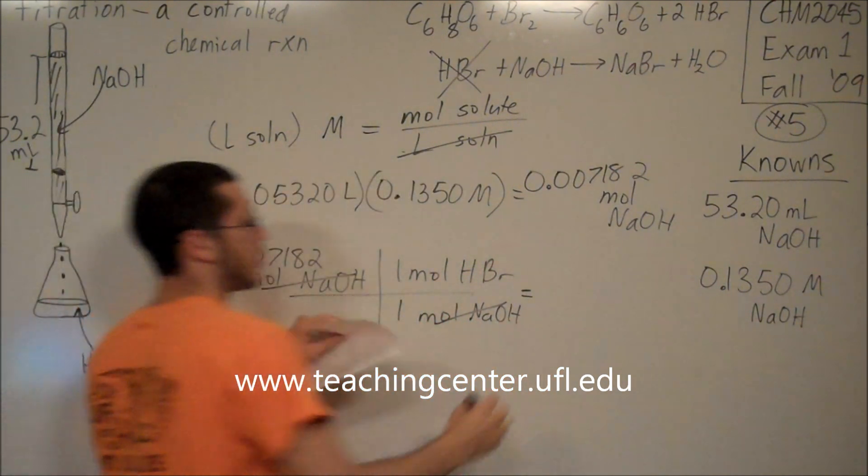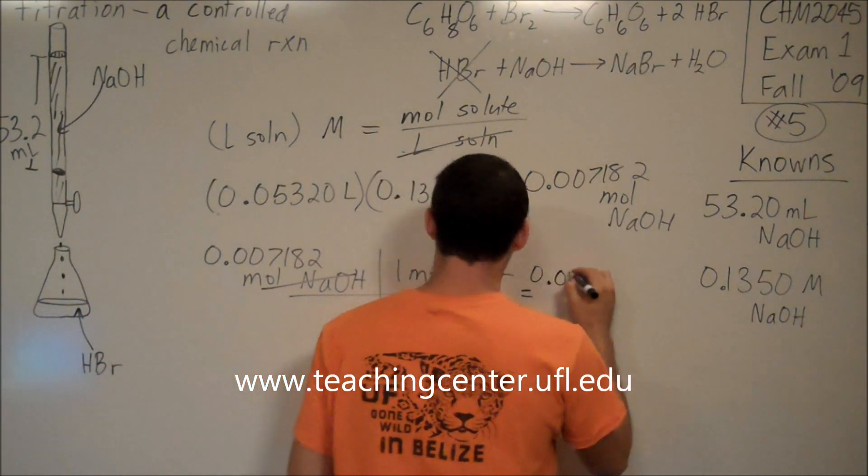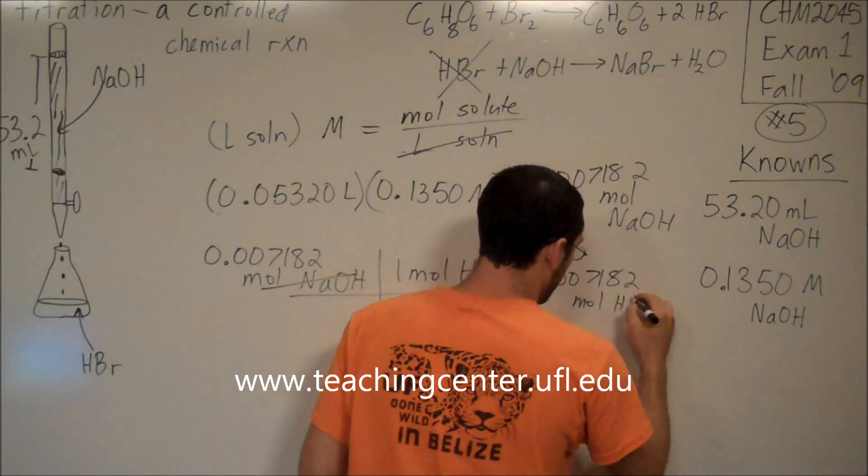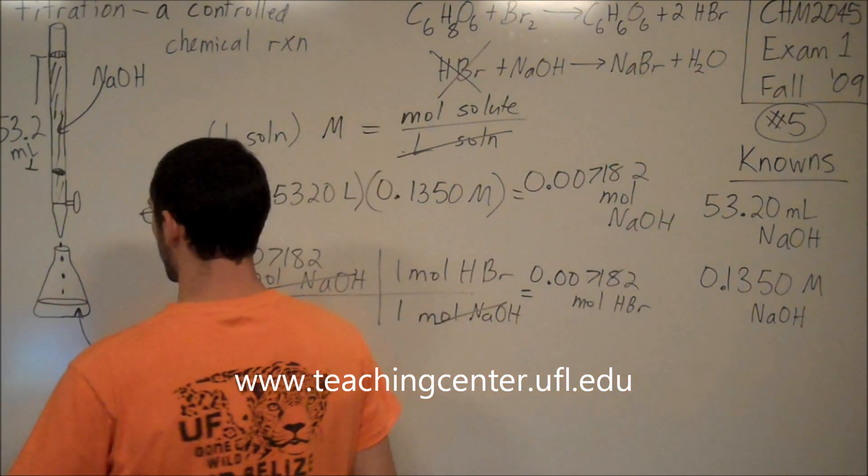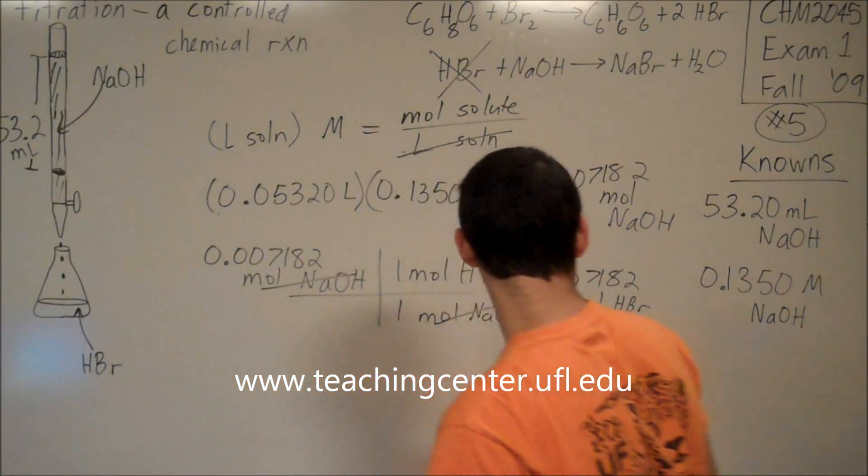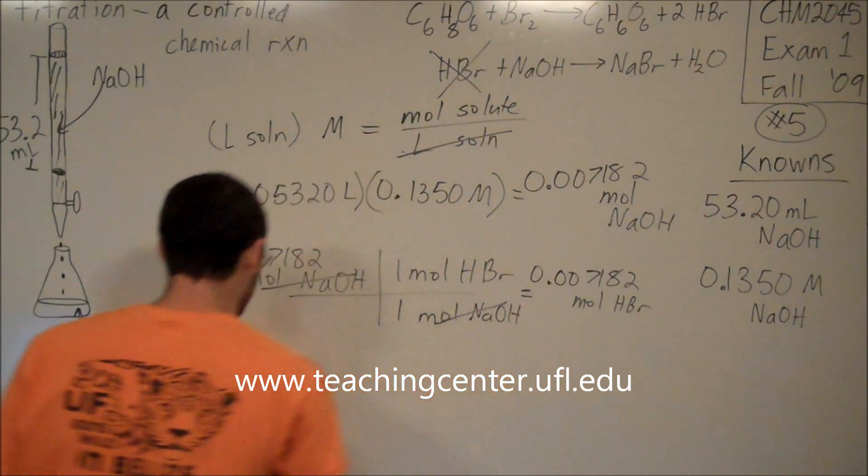I punch this out, I just get 0.007182 moles HBr. That tells me how many moles of HBr were in my Erlenmeyer flask. I'm going to take that many moles HBr.